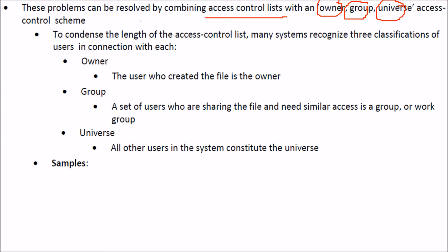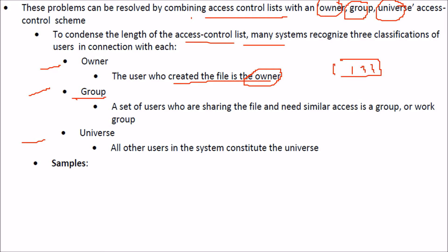To condense the length of the access control list, many systems recognize three classifications of users: owner, group, and universe. Owner means the user who created the file. Group is the set of users sharing the file who need similar access. Universe means all other users in the system who constitute the universe outside these groups.